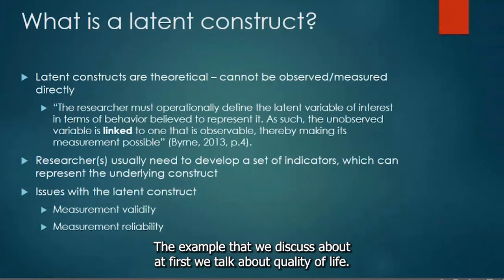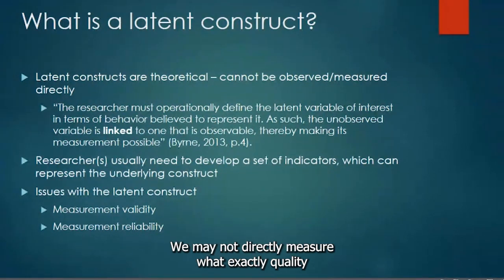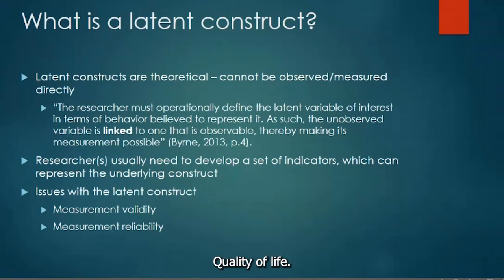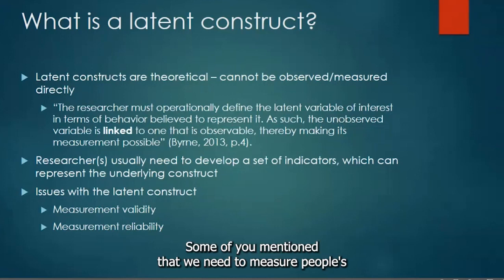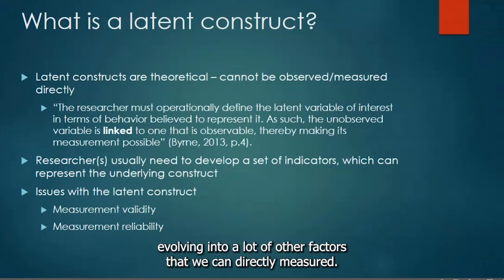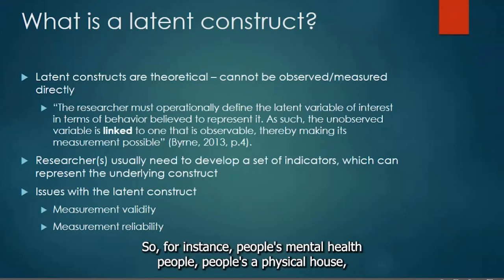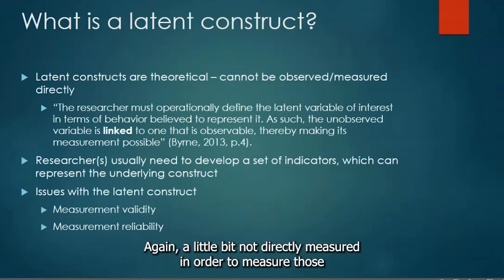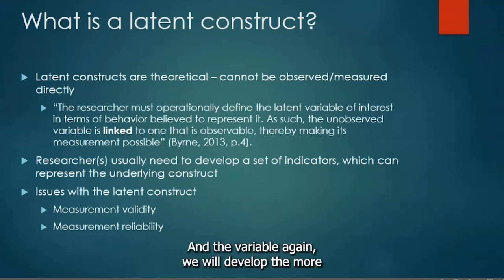Take quality of life — the example we discussed first. When we talk about quality of life, we may not directly measure what it exactly is. To represent that concept, we need to measure people's daily well-being. And that daily well-being may involve many other factors we can directly measure — for instance, people's mental health, physical health, work quality, and social life quality. All of those can again be defined as latent constructs, not directly measured.